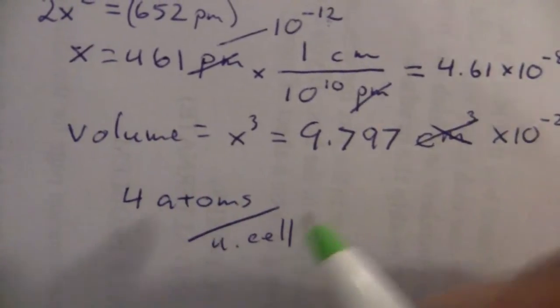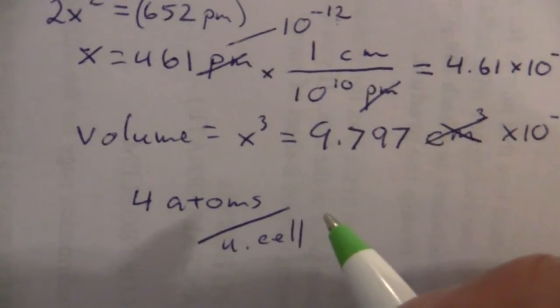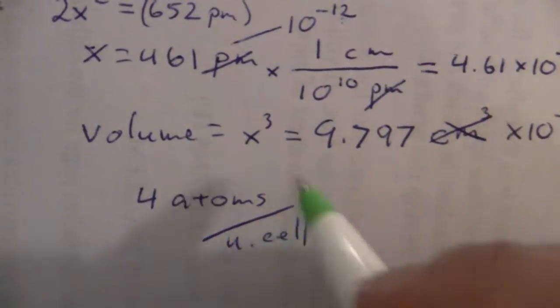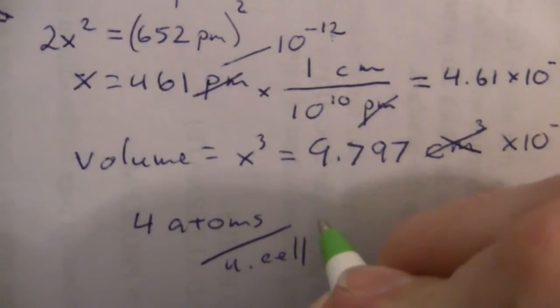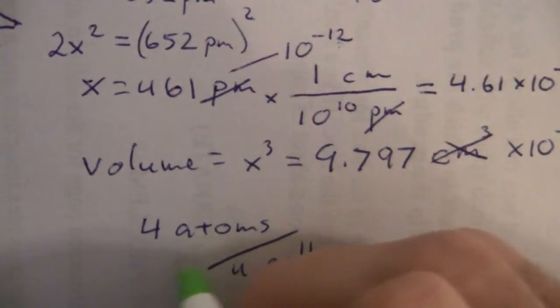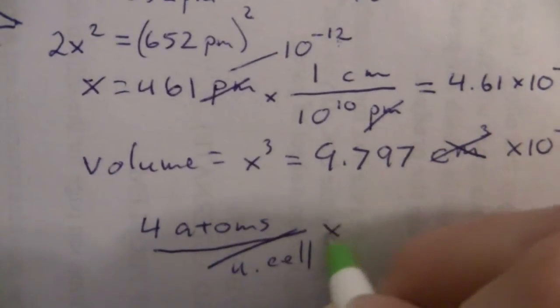So the four atoms per unit cell will tell us, or we can get the mass within that unit cell. Let me go ahead and write this a little bit nicer: four atoms per unit cell.